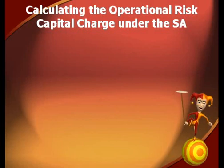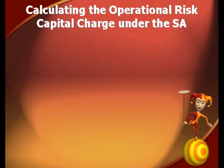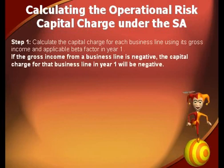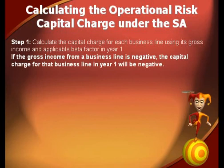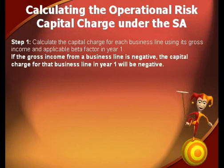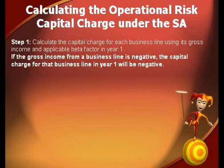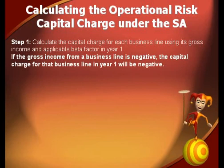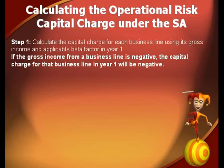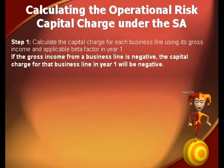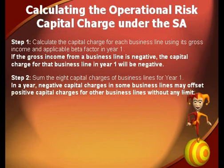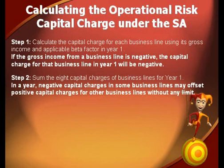We have five steps to be followed in order to calculate the capital charge. Step number one: calculate the capital charge for each business line using its gross income and applicable BETA factor in year one. Remember, if the gross income from a business line is negative, the capital charge for that business line in year one will be negative. Step number two: sum the eight capital charges of business lines for year one.